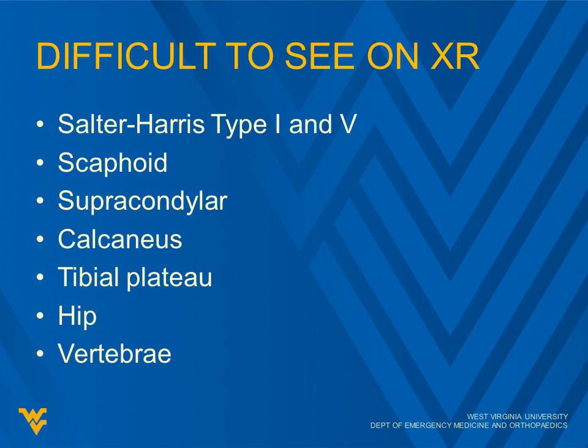Difficult to see on x-ray: Salter-Harris type 1 and 5, scaphoid, supracondylar fractures, calcaneus fractures, tibial plateau, hip, and vertebrae — all can be very difficult to see on x-ray.